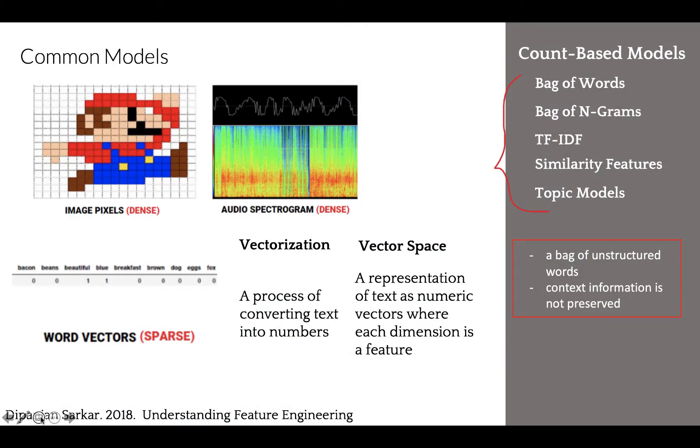When we work with speech or image recognition systems, all the information is already present in the form of rich, dense feature vectors embedded in high-dimensional datasets, like audio spectrograms and image pixel intensities.